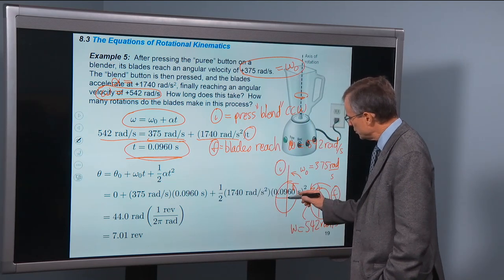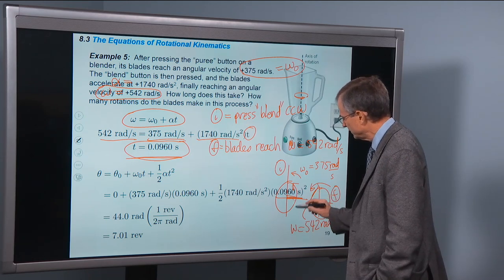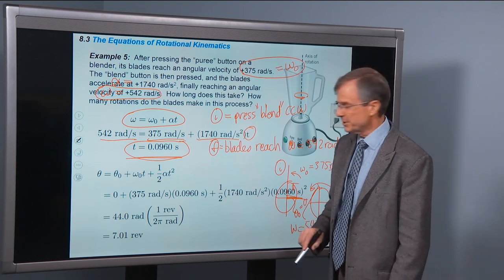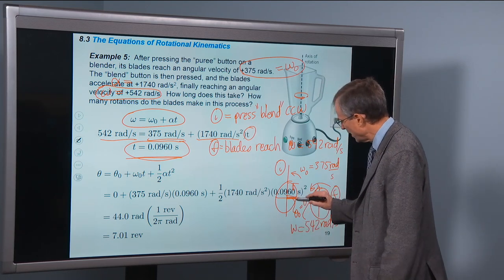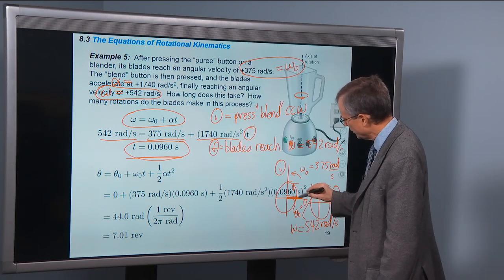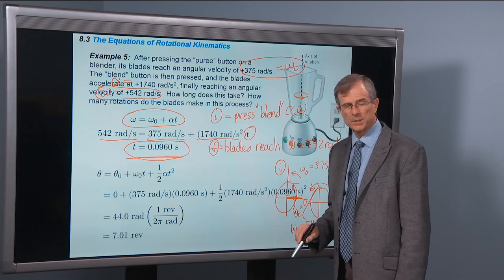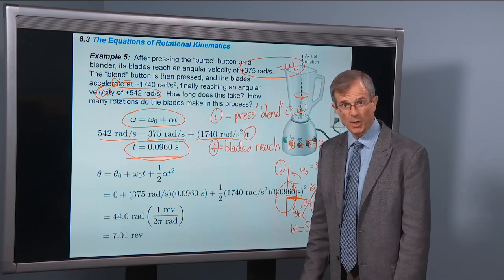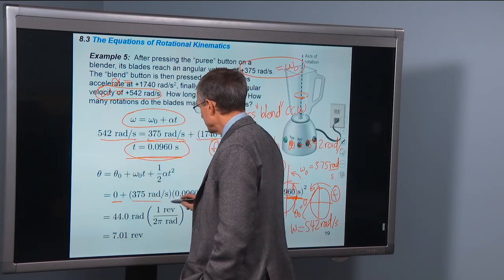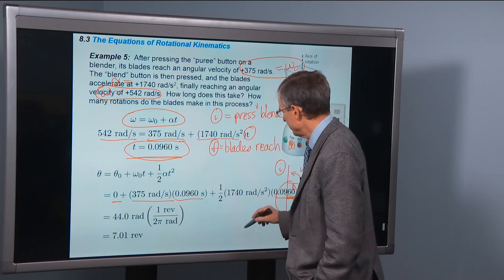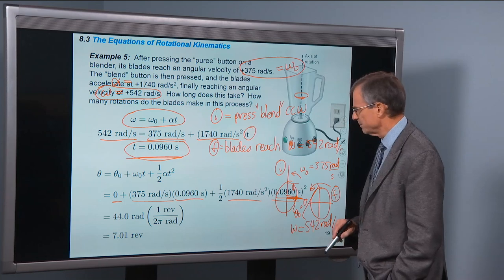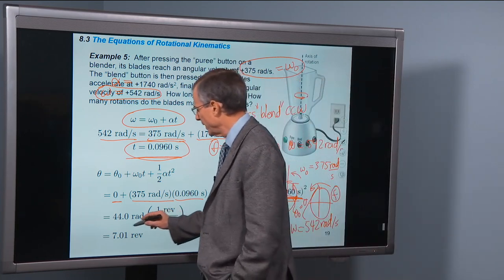So we're going to assume that theta 0 equals 0, which is usually a pretty good assumption. That just means the point that you're following on these blades, the tip of one of these blades, just happens to be at this point where theta equals 0 when you start your stopwatch. Here's theta 0 equals 0, the initial angular velocity, the time, and 1/2 the angular acceleration times the time squared. Plug those numbers in and we get 44 radians.